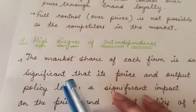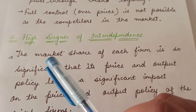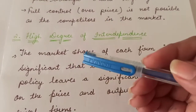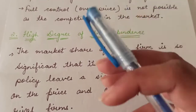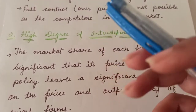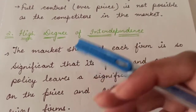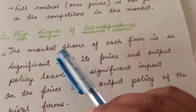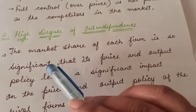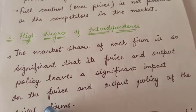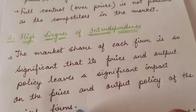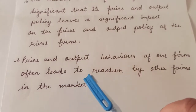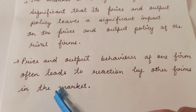The next feature is high degree of interdependence. In such a market, all the firms are interrelated — they are interdependent. If one firm changes its price and output decisions, then it will automatically affect the decisions of the other firm. The market share of each firm is so significant that its price and output policy leaves a significant impact on the price and output policy of the rival firms.